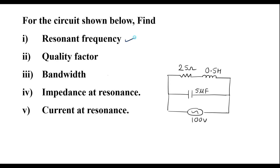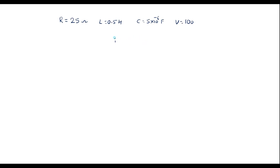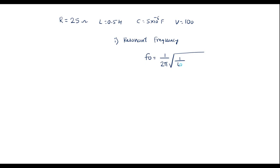Let me calculate the resonant frequency first. The formula to calculate resonant frequency for a parallel circuit is: F₀ = (1 / 2π) × √(1/LC − R²/L²). One should remember this formula.